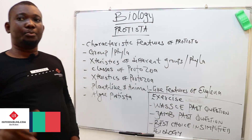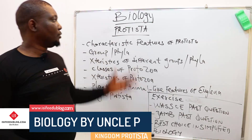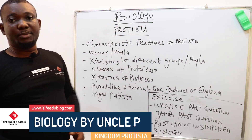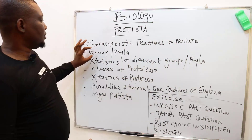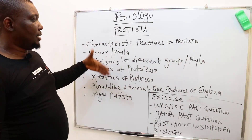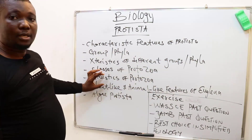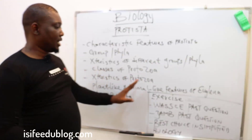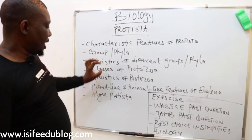Welcome to Isife EduBlock. My name is Anko P and I'll be having you on board. We're going to look at the lesson objectives: the characteristic features of Protists, the groups under the Protists, the characteristic differences of the groups, class of protozoa, characteristics of the protozoa, and the animal-like and plant-like features of Euglena and the Algae Protista.